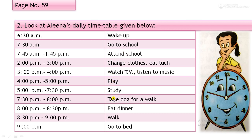The forms of the verb will change when we fill in the blanks, according to the proper tense. She watches TV, listens to the music. From 4 to 5 p.m., she plays. From 5 to half past 7, she studies. From half past 7 to 8 p.m., she takes the dog for a walk. From 8 to half past 8, she takes dinner — we say half past 8, not 8 to 8.30. You can watch a video on time on YouTube; I have already uploaded it.